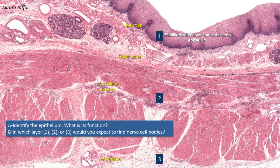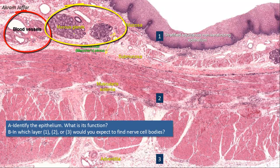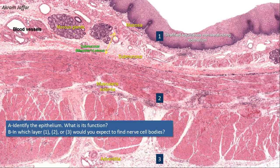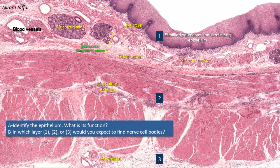Parasympathetic ganglion cells are present in the wall of the gut in two locations. In the submucosa, they form the submucosal plexus, also called Meissner's plexus. This is the region of the submucosa where you can see connective tissue containing blood vessels and mucus glands. The postganglionic fibers supply the glands and also the smooth muscle of the muscularis mucosa, which you can see here as the deepest part of the mucosa, adjacent to the submucosa.